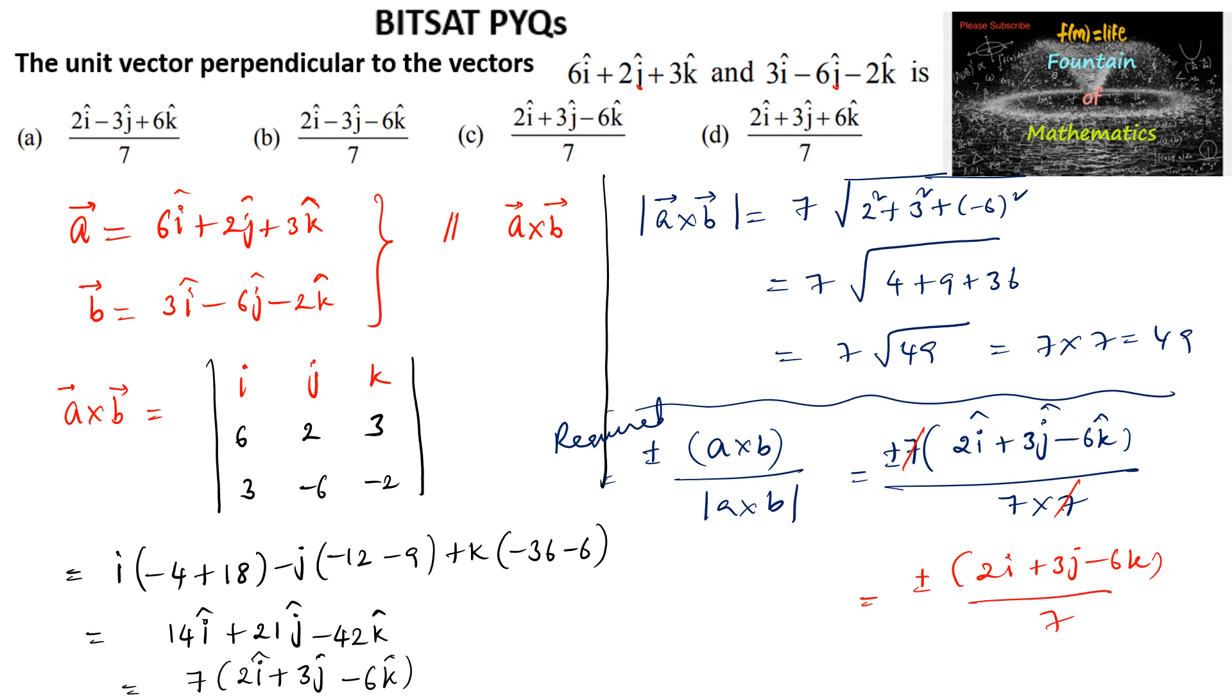So among the 4 options we can see 2i plus 3j minus 6k upon 7 is option c.